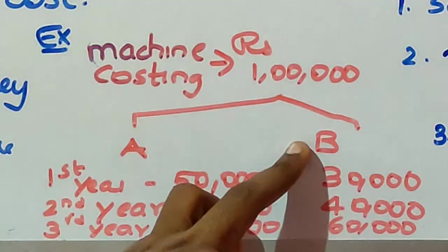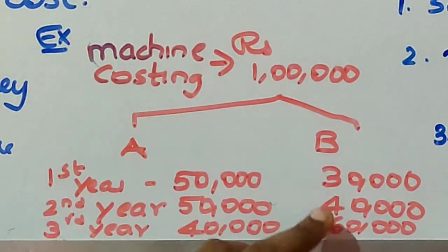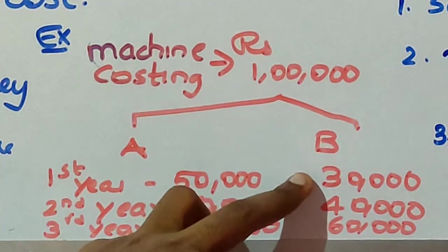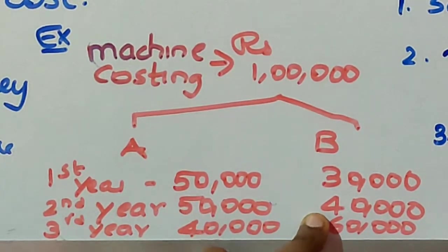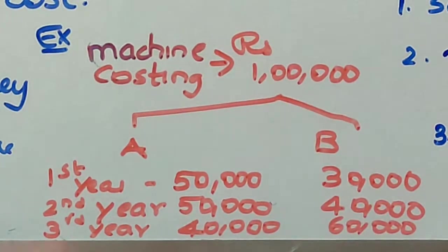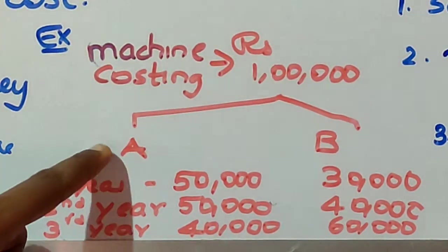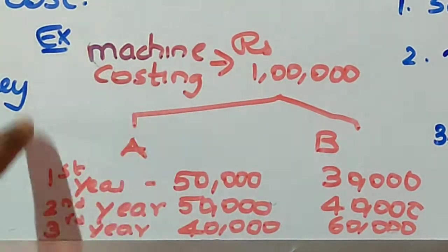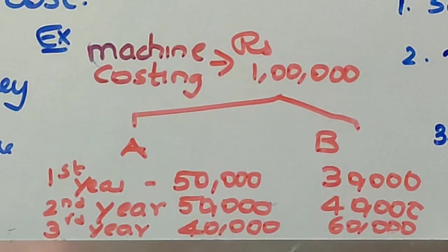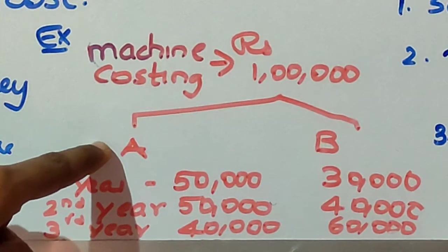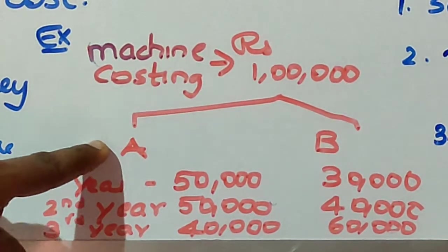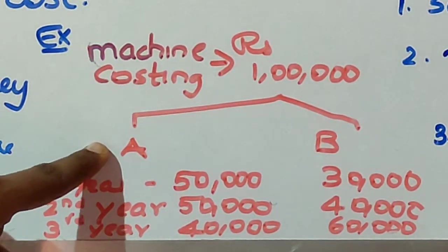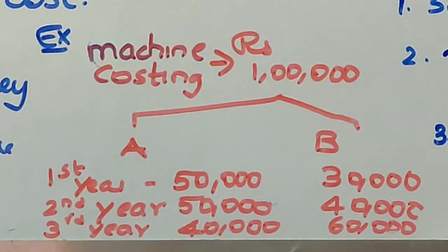Machine B generally takes 2 and a half years — that is, 30,000 plus 40,000 is 70,000, and still 1 lakh has to be recovered from the third year, so it takes 2 and a half years to recover. Machine A is taking lesser time than Machine B, so Machine A is generally selected. When a project is selected on the basis of payback period — the length of time required to recover the cost — it is termed as the payback period method.